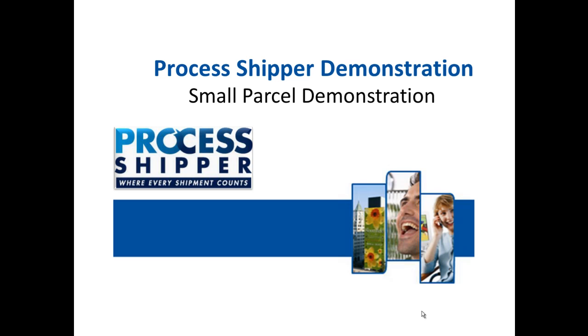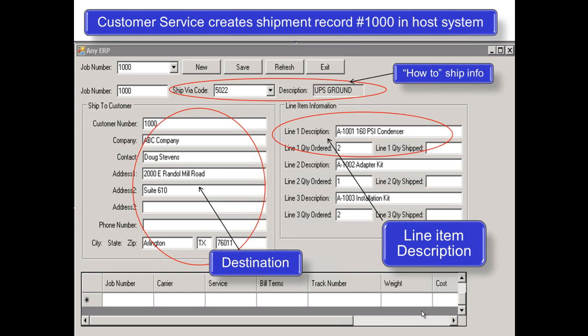Let's walk through a few examples together so I can show you just how easy it is to ship with Process Shipper. Here we can see the customer service representative is creating shipment record number 1000 within the host system. This includes the ship-to address, the ship via code, as well as the line items of what exactly will be shipped.